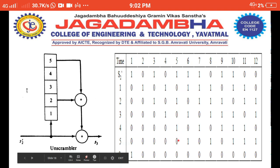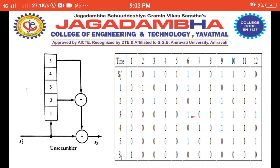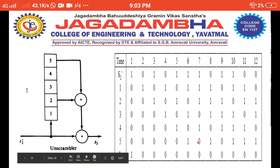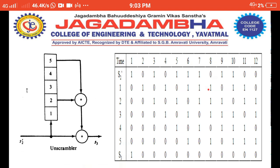Continuing unscrambling: 1 XOR 0 = 1, 1 XOR 1 = 0 — unscrambled bit = 0. Then: 0 XOR 1 = 1, 1 XOR 1 = 0 — unscrambled bit = 0. Then: 1 XOR 0 = 1, 1 XOR 1 = 0 — unscrambled bit = 0. S2' continues to be shifted through the register positions 1→2→3→4→5 for each step.